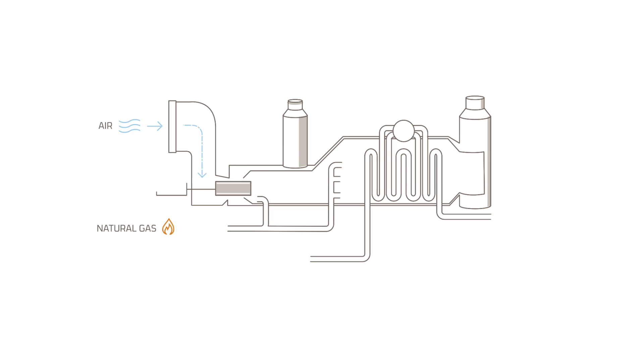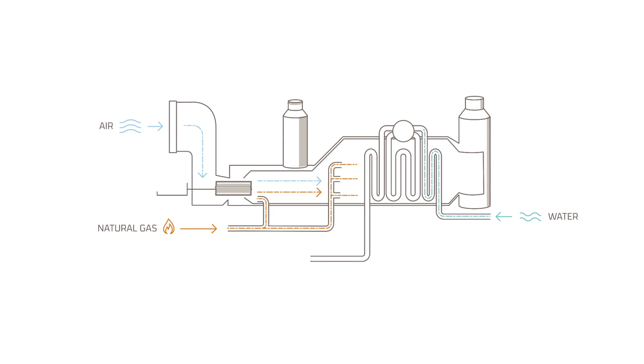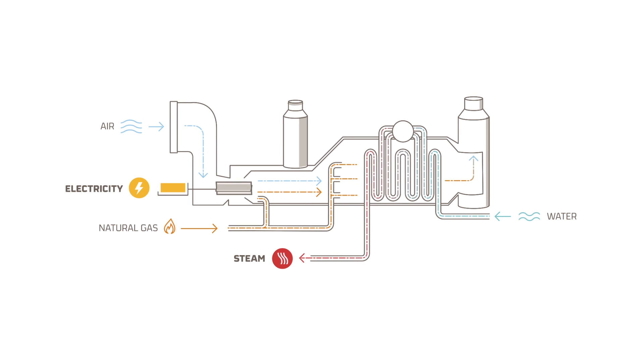Refineries have cogeneration plants that they use to supply their own electricity. This reduces emissions into the environment and makes the entire process more efficient.